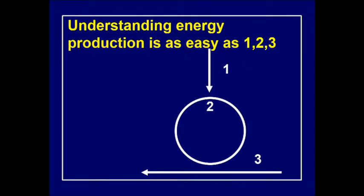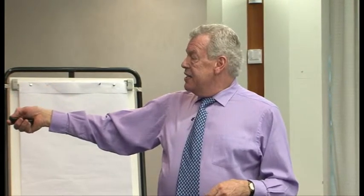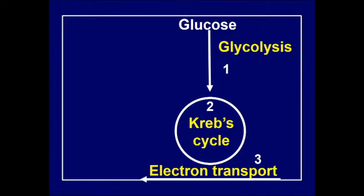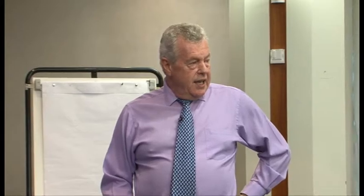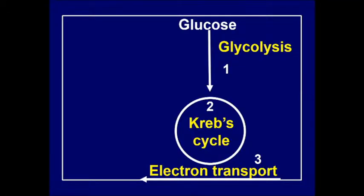Understanding energy production is easy or as complex as you want. Imagine three lines: a vertical line, a circle, and a horizontal line. One is glycolysis — the conversion of glucose, anaerobic, requiring no oxygen, occurring in the cytoplasm outside the mitochondria, producing very little energy. Two is the Krebs cycle inside the mitochondria, whose sole purpose is producing NADH and FADH2. Three is the electron transport chain in the mitochondrial membrane.